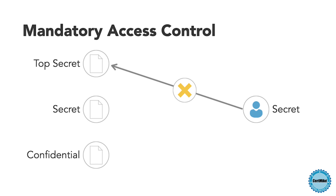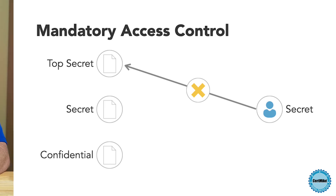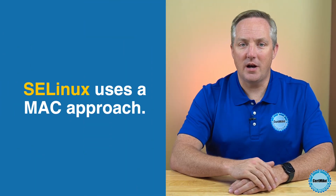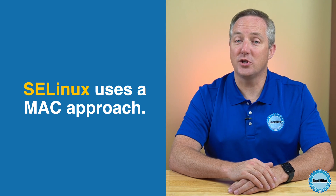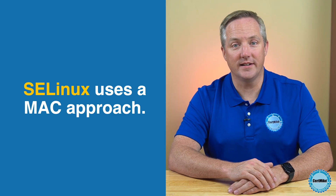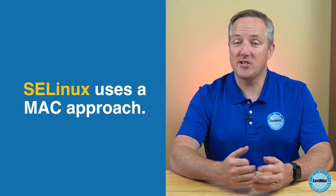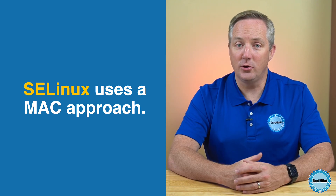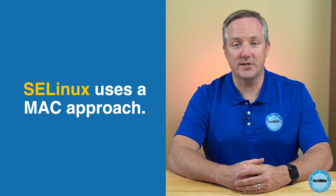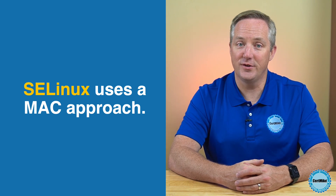The most common example of an operating system implementing MAC is Security Enhanced Linux, or SELinux. This is a Linux kernel security module developed by the U.S. National Security Agency in the 1990s, and included in some Linux distributions, including Red Hat Enterprise Linux, CentOS, and Fedora.